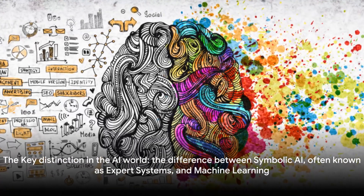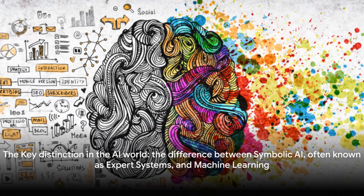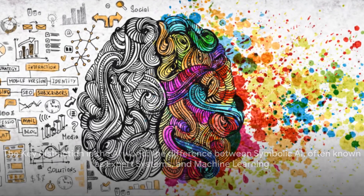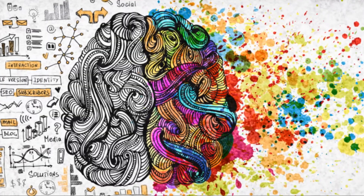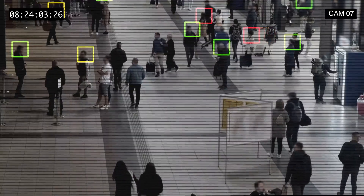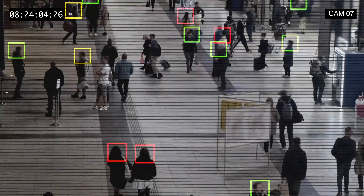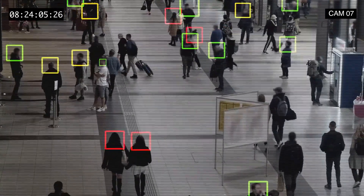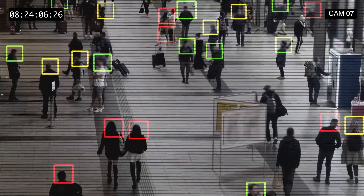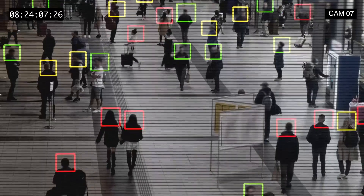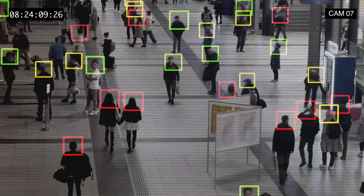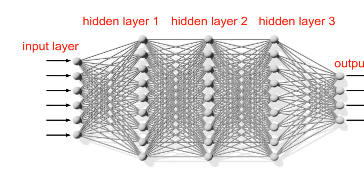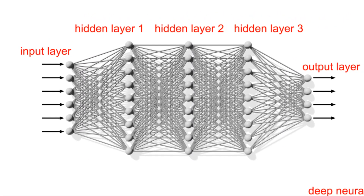Welcome to an insightful journey where we unravel the intricacies of artificial intelligence. Today we're diving into a key distinction in the AI world: the difference between symbolic AI, often known as expert systems, and machine learning.